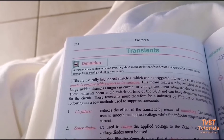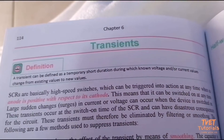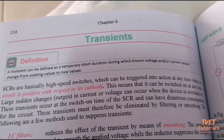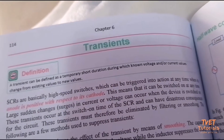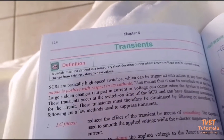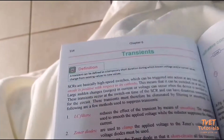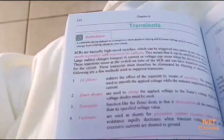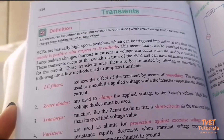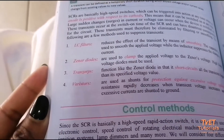A transient can be defined as a temporary short duration change — the current and voltage values change from existing values to new values. Simply put, transients are unwanted voltages and unwanted currents. In order to eliminate unwanted voltages, we use LC filters, Zener diodes, and varistors.